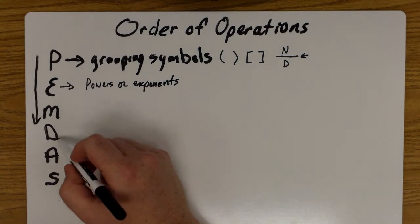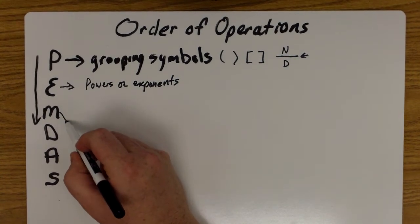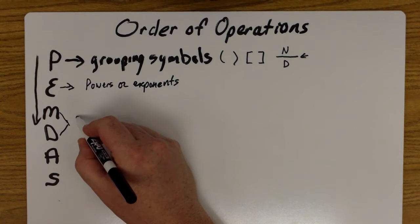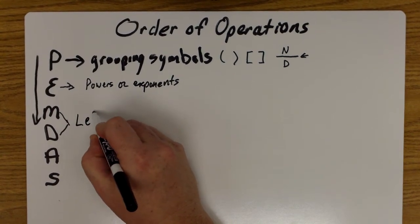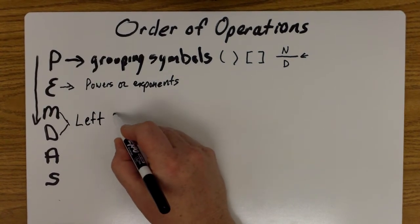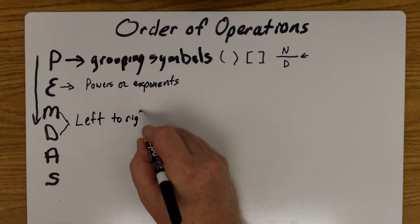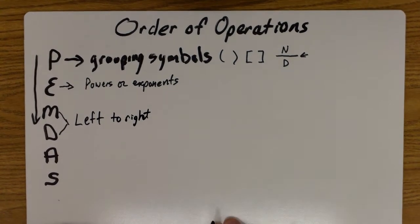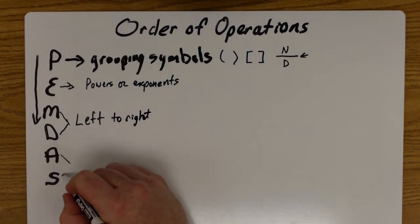The next ones are multiply and divide. So we're going to multiply and divide from left to right, whatever order they come in, left to right. And we're going to add and subtract